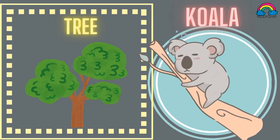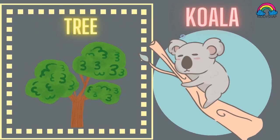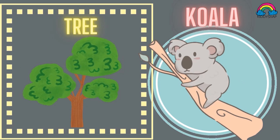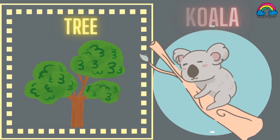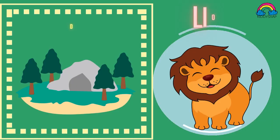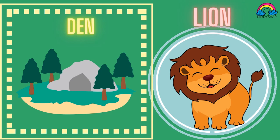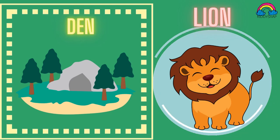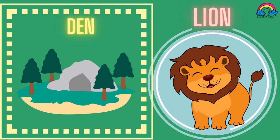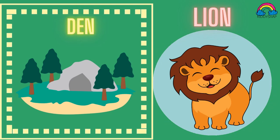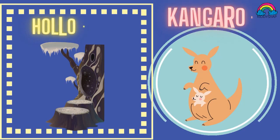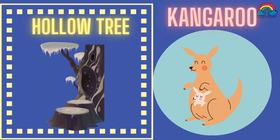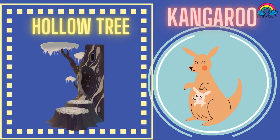Koala lives in trees like monkeys, so the house of a koala is a tree. Lion lives in a den, so the house of a lion is a den. Kangaroo lives in a hollow tree, so the house of a kangaroo is a hollow tree.